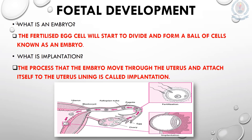What happens after the egg is successfully fertilized by a sperm cell? The fertilized egg cell will start to divide and form a ball of cells known as an embryo. The embryo will move through the uterus and attach itself to the uterus lining. This process is known as implantation.